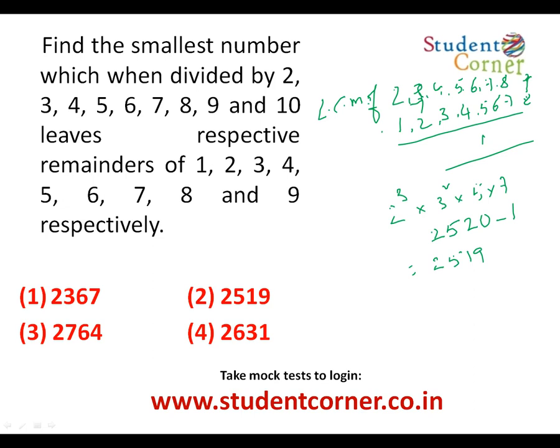Using common sense and divisibility rules as a shortcut: since dividing by 2 leaves remainder 1, the answer must be an odd number, eliminating one option. Since dividing by 3 leaves remainder 2, the sum of digits must leave remainder 2 when divided by 3. Checking the options: digits summing to 18 are exactly divisible — not valid. Digits summing to 12 are also divisible — not valid. Digits 2+5+1+9 = 17, and 3×5=15 leaves remainder 2. So the answer confirmed is 2519.